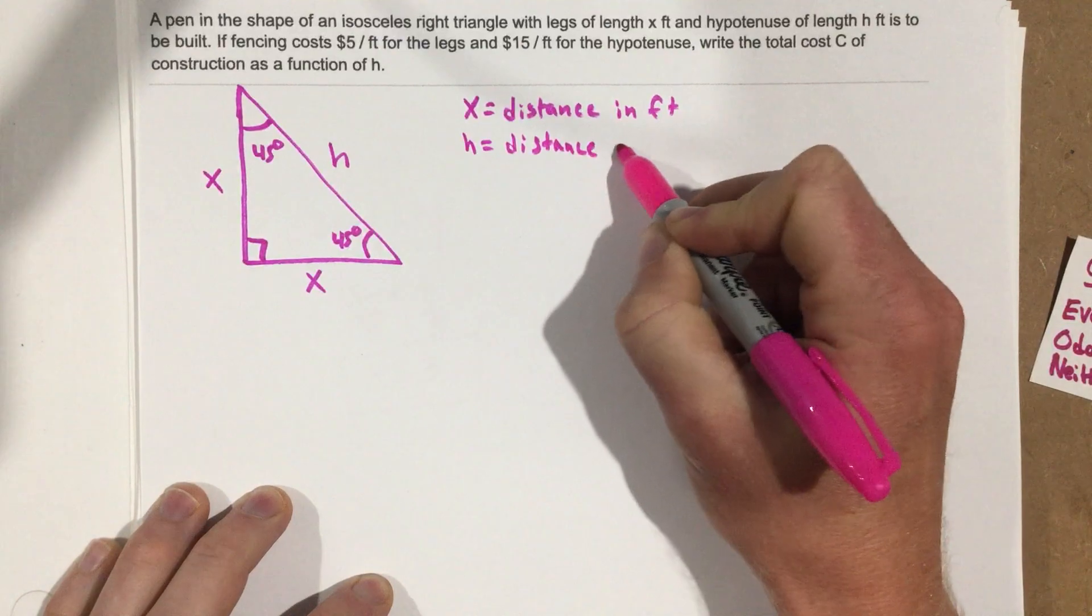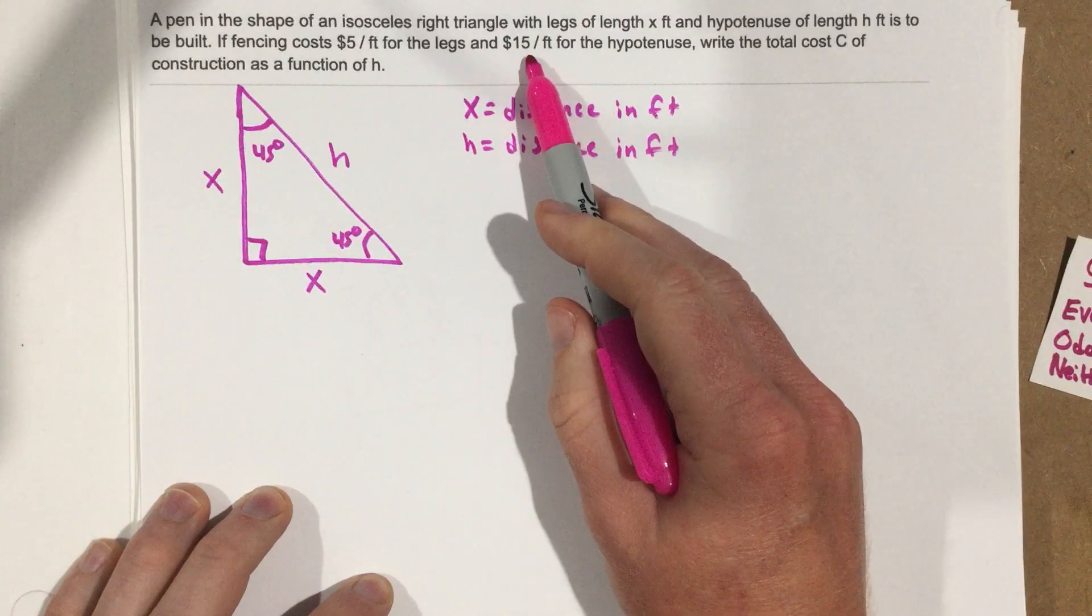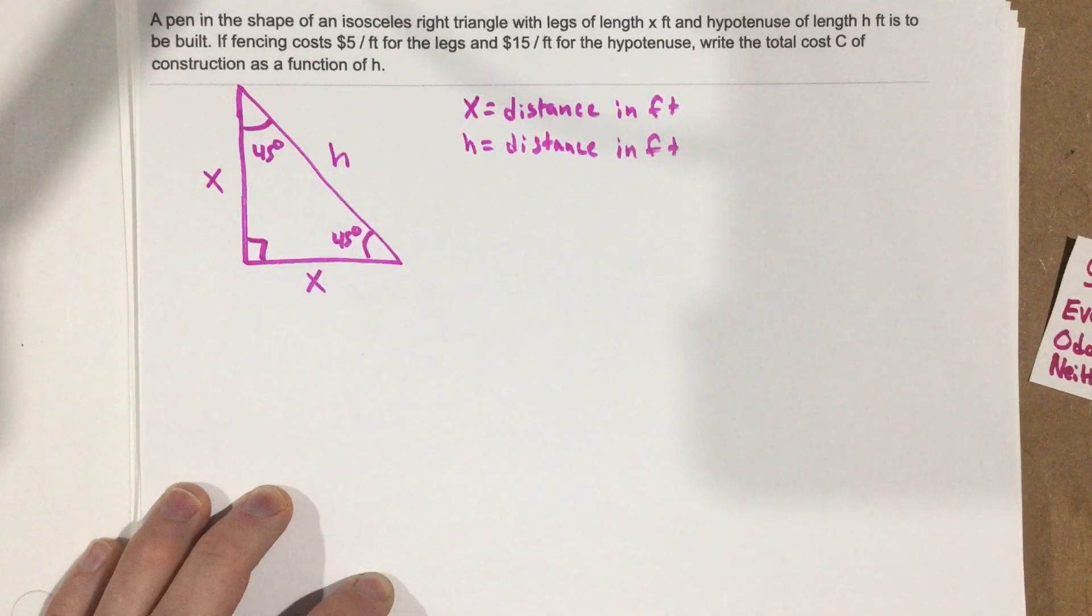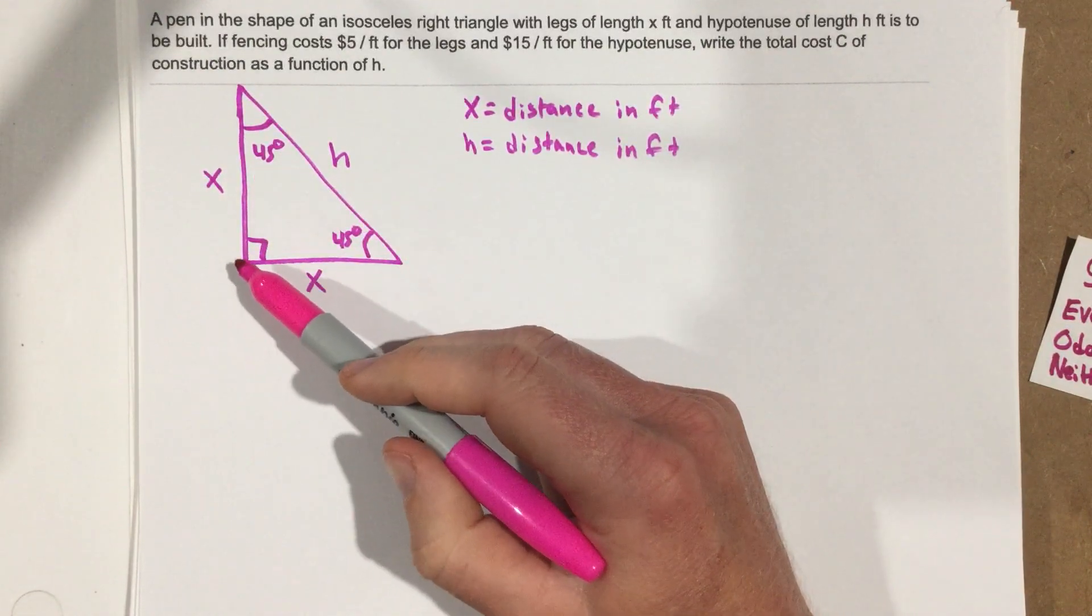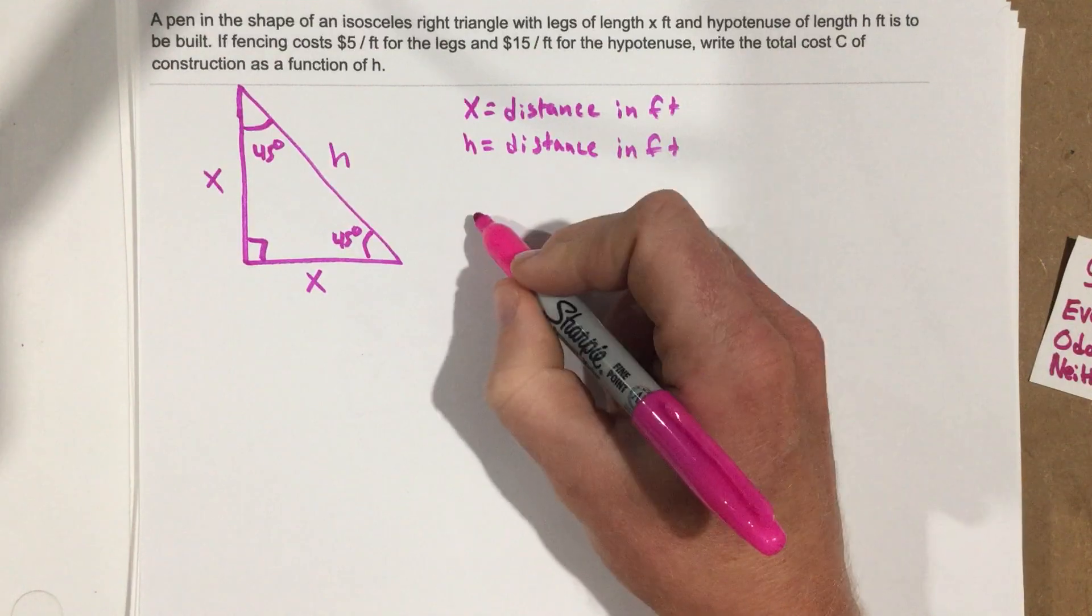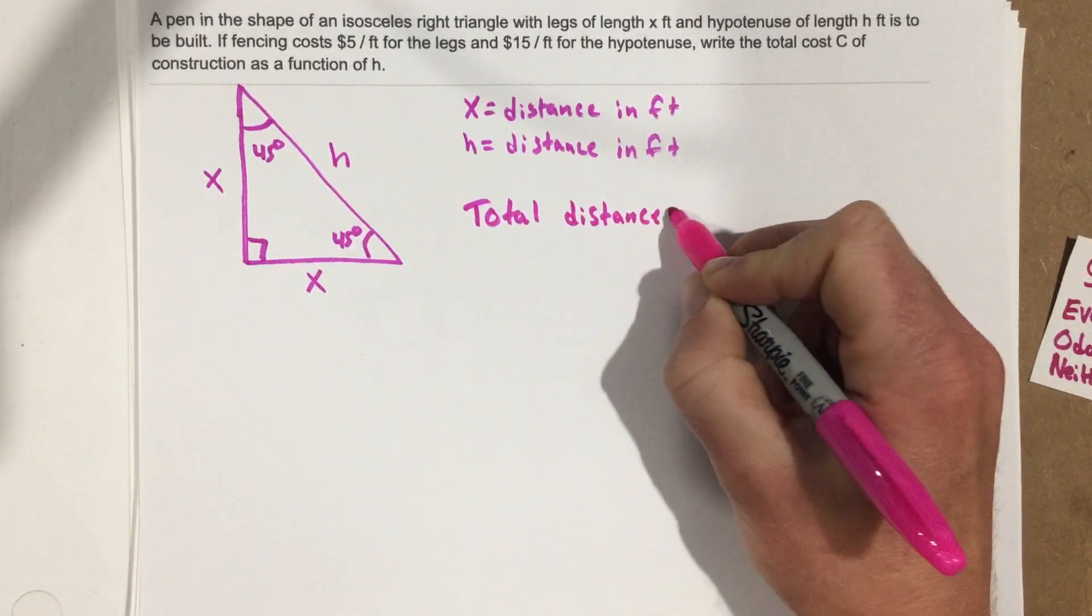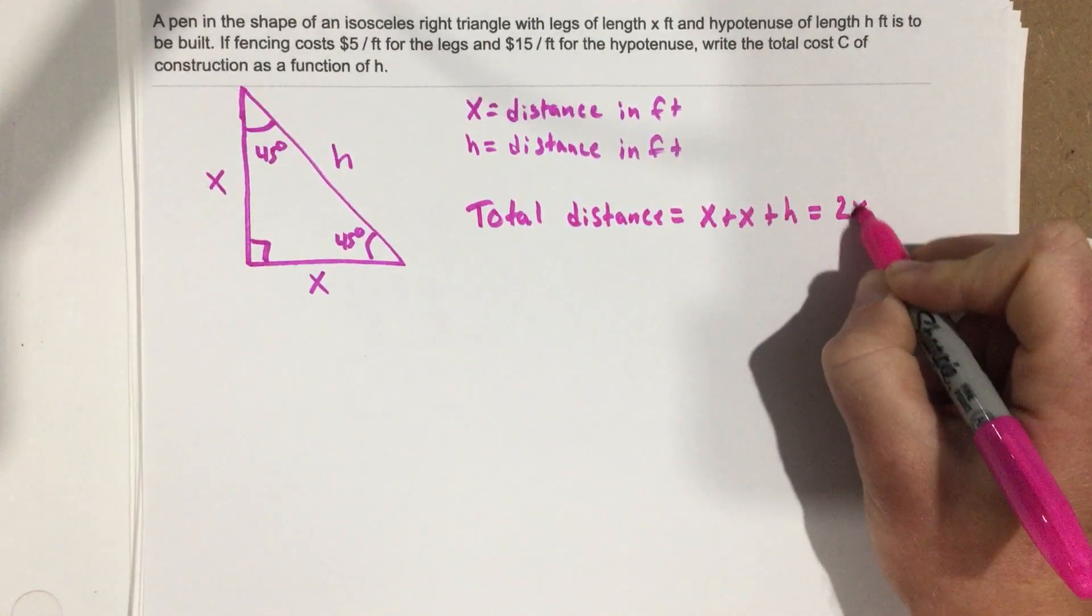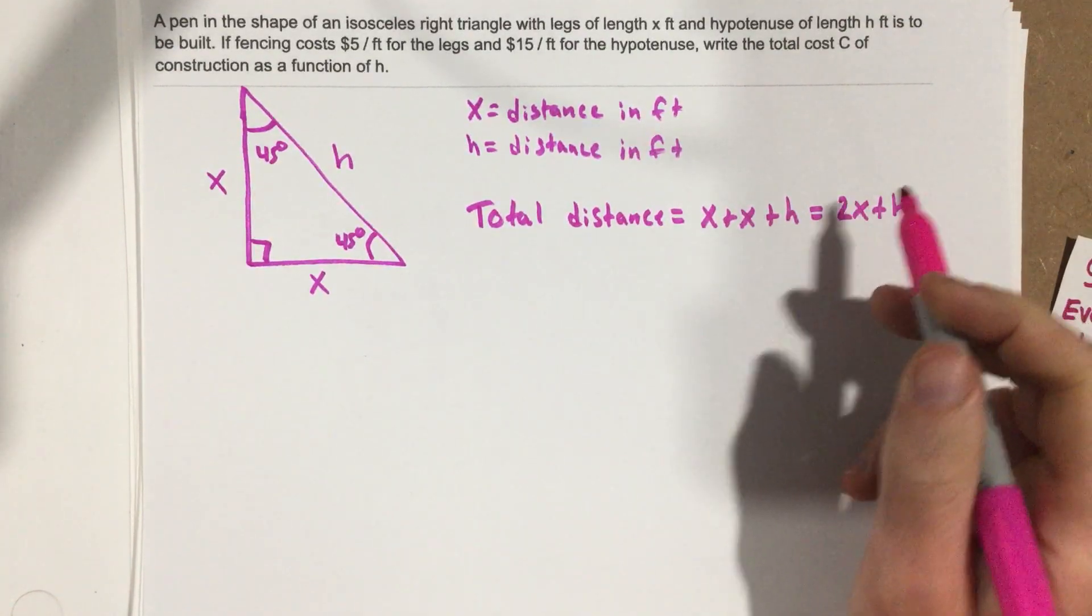Neither of those have to do with a cost. So if we're going to calculate the cost of fencing, we're just going to take X plus H plus X. So let's go ahead and write that first. Our total distance equals X plus X plus H, which is 2X plus H. So that's the total distance that we have of fencing.